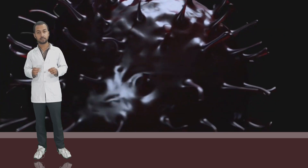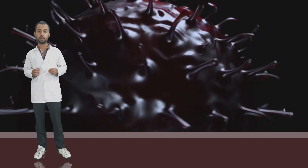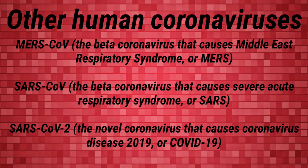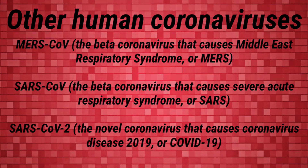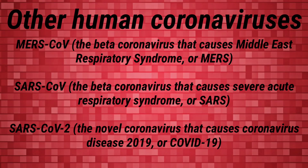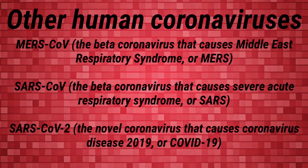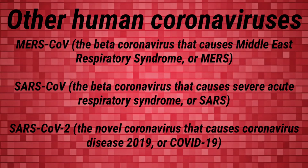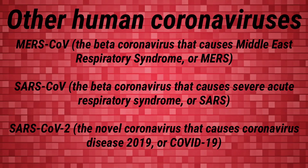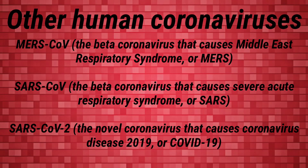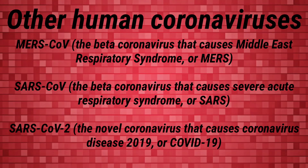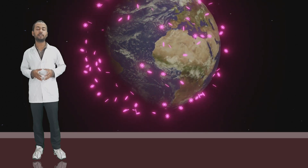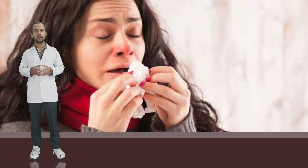The three most dangerous coronaviruses that cause severe problems in humans include: MERS-CoV, the beta coronavirus that causes Middle East Respiratory Syndrome (MERS); SARS-CoV, the beta coronavirus that causes Severe Acute Respiratory Syndrome (SARS); and SARS-CoV-2, the novel coronavirus that causes coronavirus disease 2019, or COVID-19, declared a pandemic by the WHO and causing severe problems worldwide.